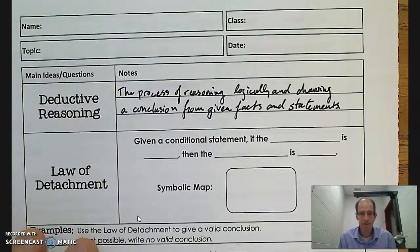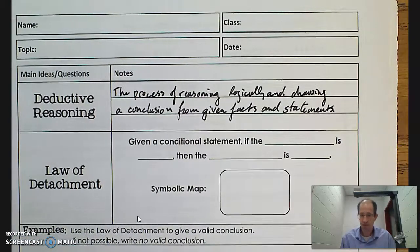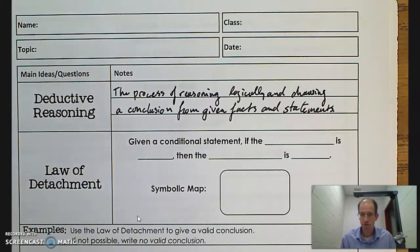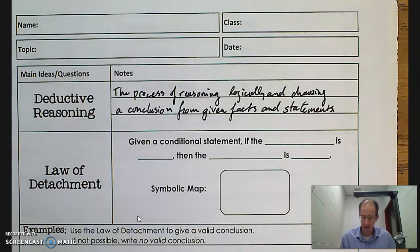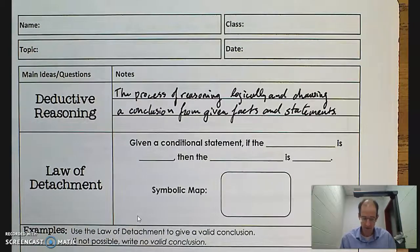Basically, I have a problem to solve and I'm going to use what I know already — facts that I know, for instance definitions that we've agreed upon, properties of polygons that I've already discovered and know to be true, theorems that I've proven before — to figure out the answer to a specific problem. I'm reasoning from the general, my general knowledge, to solve a specific problem.